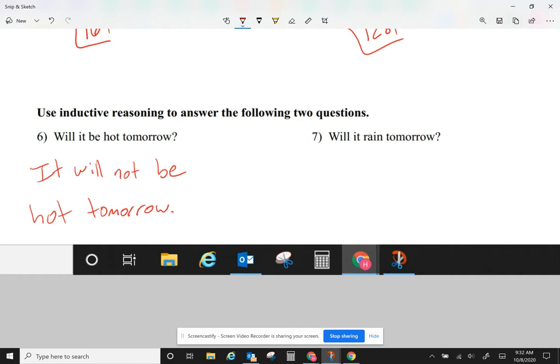Question number seven. Will it rain tomorrow? Yeah, it didn't rain yesterday or the day before it or the day before it or for a long time. It hasn't rained. I haven't seen rain for a long time. So, will it rain tomorrow? I don't think so. My answer for this will be, it will not rain tomorrow.